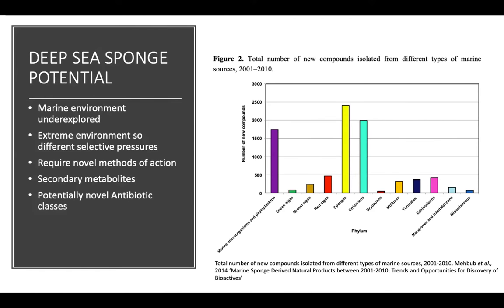Sea sponges in particular are sessile benthic animals and very efficient filter feeders. Incredibly, they can filter 50,000 times their own body volume within just one day. This leaves them regularly exposed to debris, predation and pathogens. In order to protect themselves from such threats, they secrete secondary metabolites.